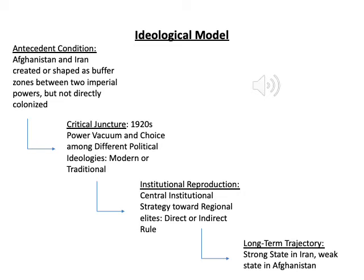Traditionalists want to replace those elites who they view as rivals, but those elites who they view as allies due to long-standing family or patronage ties, they'll let them stay in power and have autonomy. That would be the strategy of indirection.